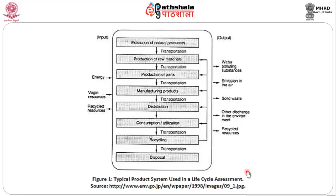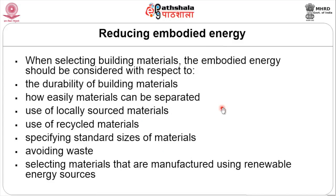We have seen the embodied energy associated with life cycle assessment in terms of input and output. In the input we have energy, virgin resources and recycled resources; in the output, water, emissions in the air, solid waste, and recycled treatment. Reducing this embodied energy is achieved by selection of appropriate materials, analyzing durability — that is the strength of building material — using passive building materials for sustainable construction, using locally available and recycled materials efficiently, and standardizing sizes to minimize waste.